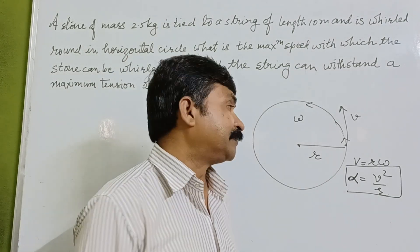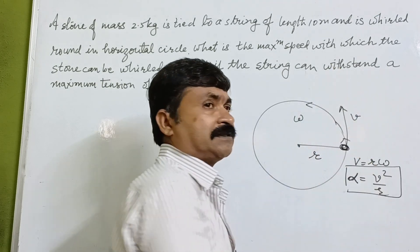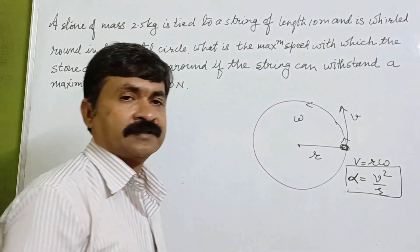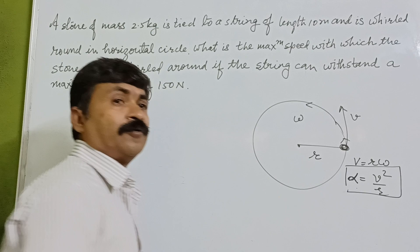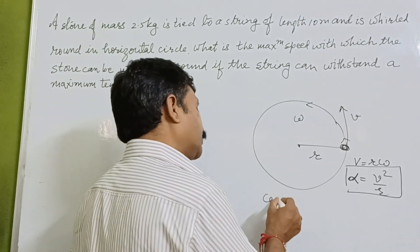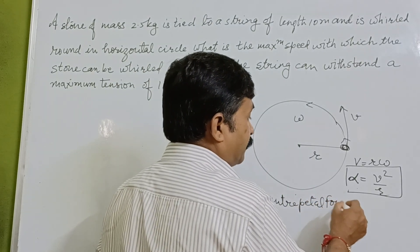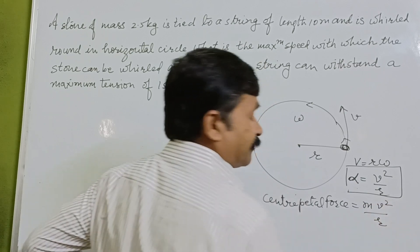Centripetal acceleration, and if this particle which is moving with a velocity v and having an acceleration v square upon r, so it will have a force, and that force is known as centripetal force. So centripetal force will be given by mass into acceleration, that is mv square upon r.